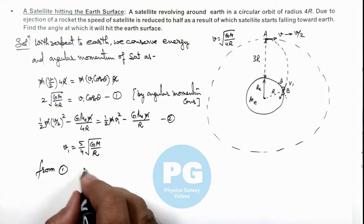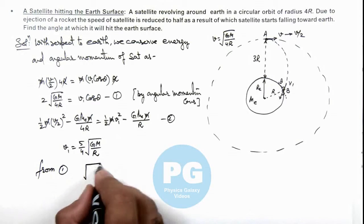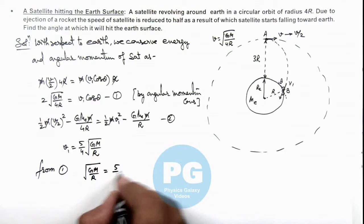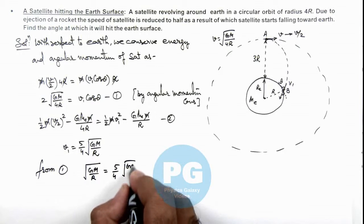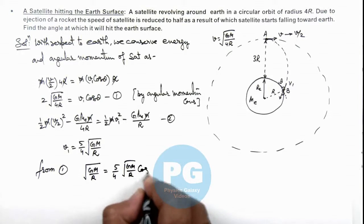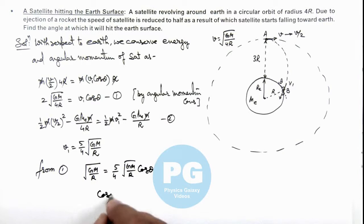From equation 1, we can see the result will be √(GME/RE) = (5/4)√(GME/RE) cos θ, which gives us cos θ = 4/5. Therefore, θ = 37°. That is the final result of this problem.